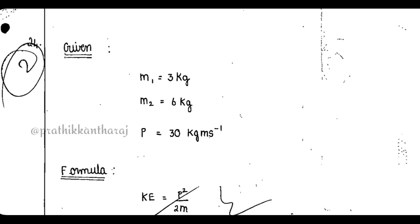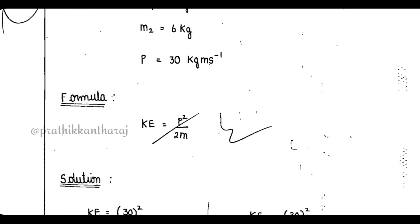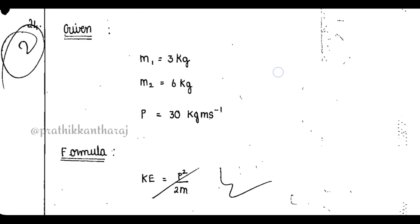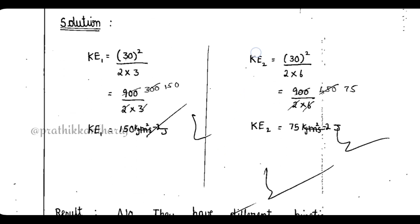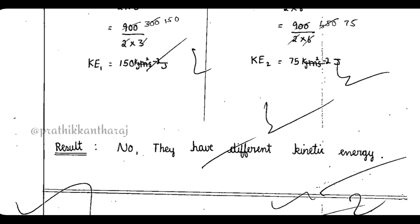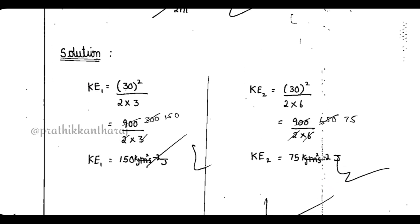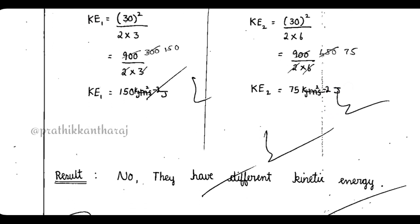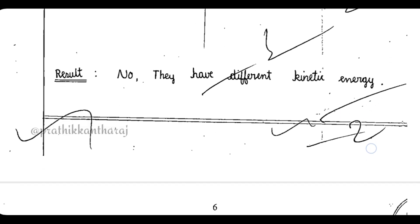If you have a sum, you will have a solution. If you have a formula, you will get 1 mark for it. Suppose you have two cases — two kinds of kinetic energy — then you will have different kinetic energy. But you will have a conclusion or inference like: they have different kinetic energy. So this also carries a mark.